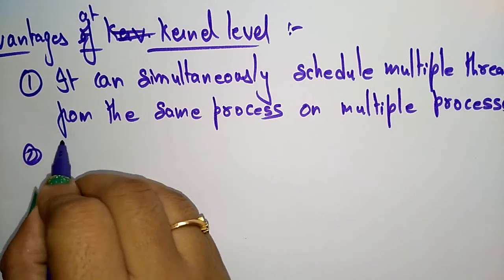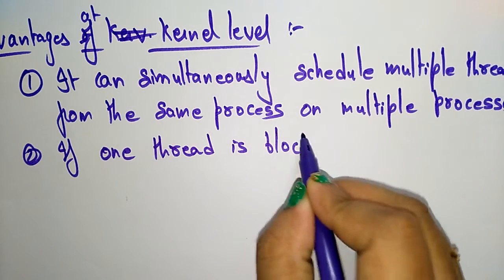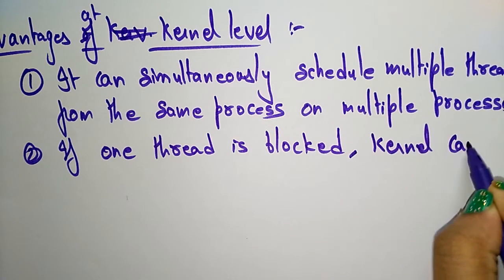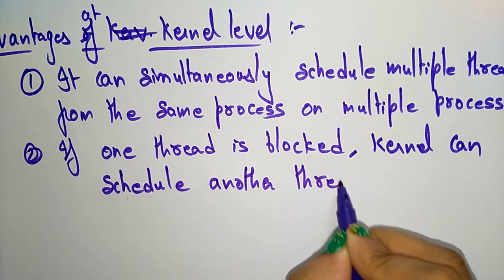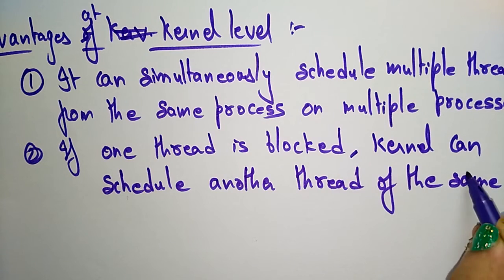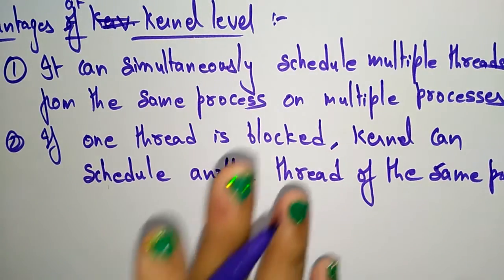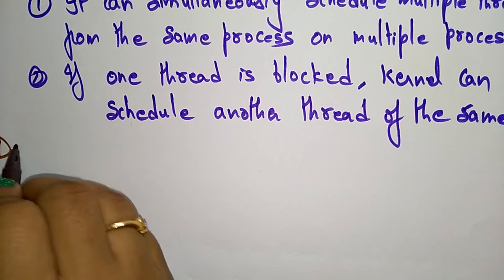The second advantage: if one thread in a process is blocked, the kernel can schedule another thread of the same process. So if one thread is blocked, it doesn't stop the execution — the kernel can schedule another thread in the same process. That is one of the advantages of using kernel-level threads.